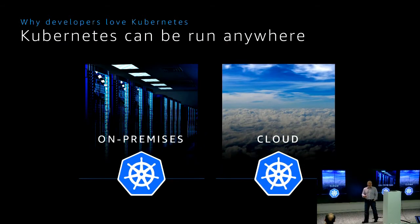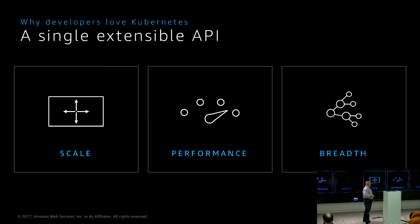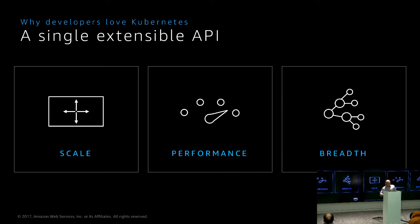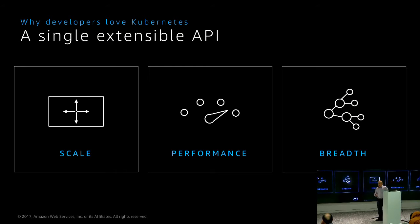Second reason: Kubernetes can be run anywhere — whether it's your laptop with Minikube, your on-premises data center, or in the cloud. One of the advantages, regardless of where you're running it, you get a single extensible API. The same commands you use on Minikube work in your data center and work in the cloud. That makes any kind of deployment or migration very easy. This extensible API is performant at large scale, and because it's extensible you can plug in any kind of modules.